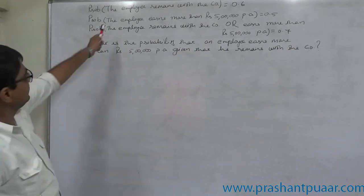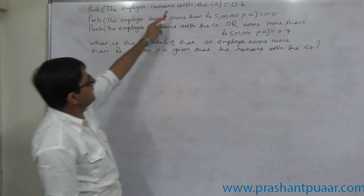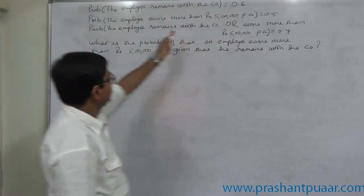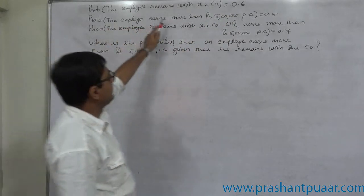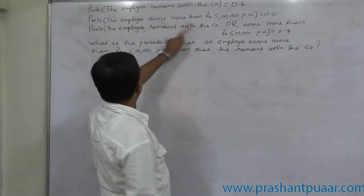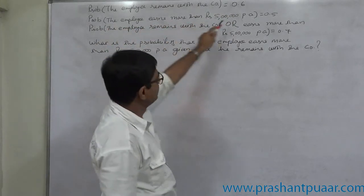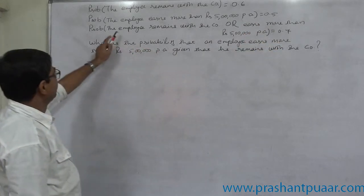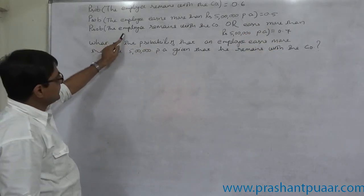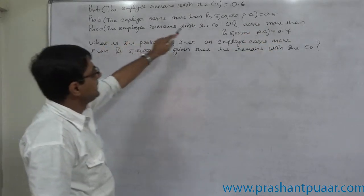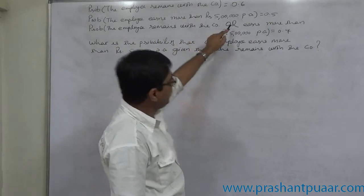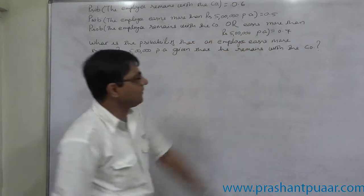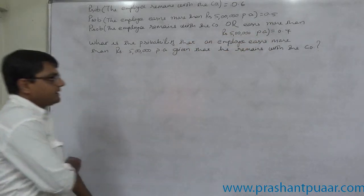The probability the employee remains with the company equals 0.6. The probability any employee earns more than Rs.5 lakh per annum is 0.5. The probability that an employee remains with the company or earns more than Rs.5 lakh per annum is 0.7.